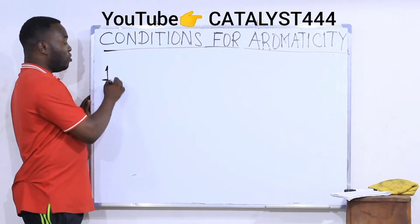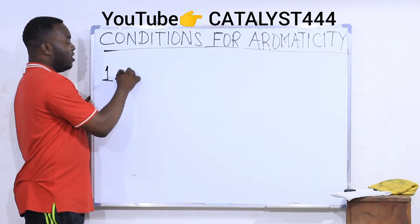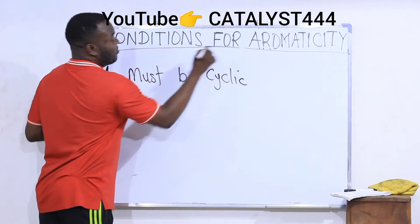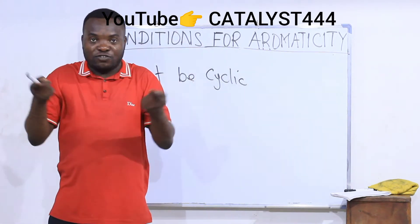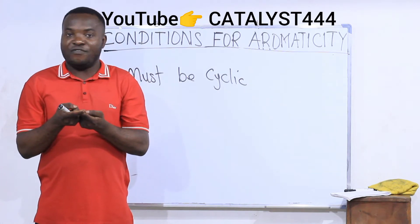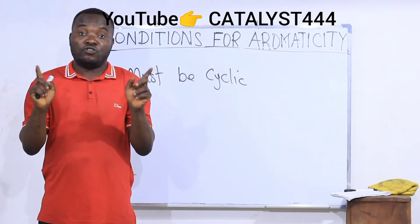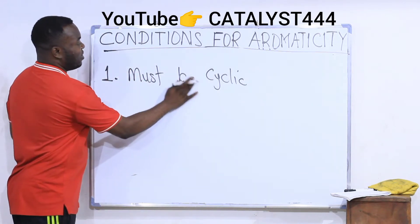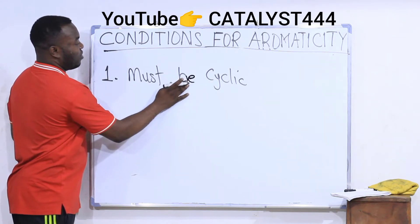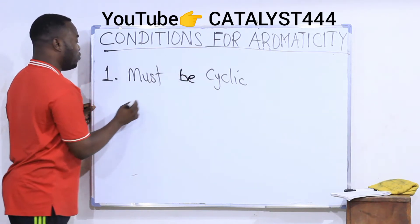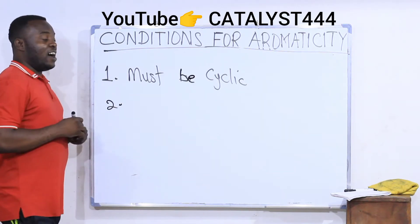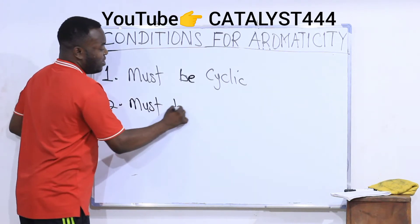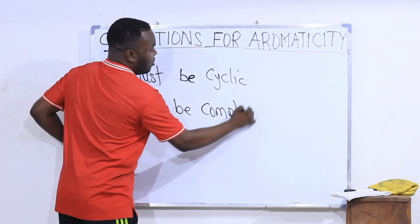Condition number one: the compound must be cyclic. The molecule must have a cyclic structure — it should never be an open chain. No open-chain compound is aromatic. So condition number one is that it must be cyclic, like a circle or a ring.